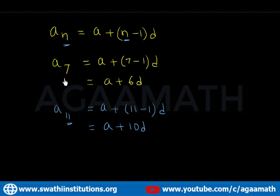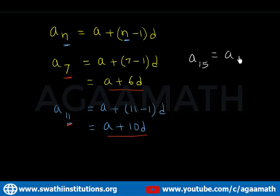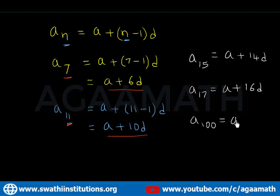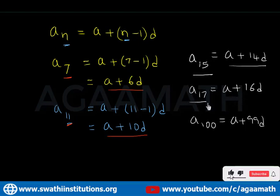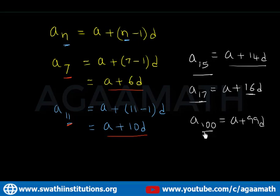Observe carefully: a7 = a + 6d, and a11 = a + 10d. Following this pattern, a15 = a + 14d, a17 = a + 16d, and a100 = a + 99d. This is how we understand the formula — just substitute n and compute n minus 1.